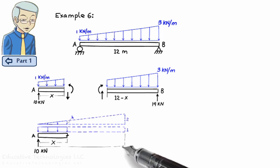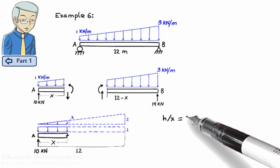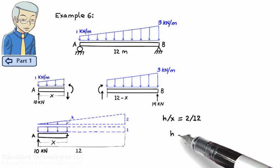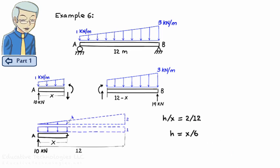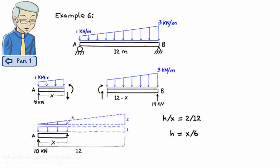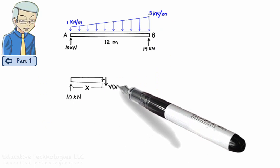Note that the height of the triangular segment at x can be determined using similar triangles, that is, h over x equals 2 over 12 or h equals x over 6. So now we can draw the free body diagram of the left segment like this.